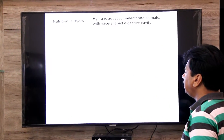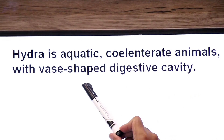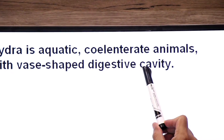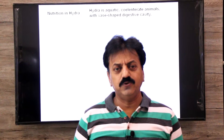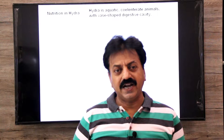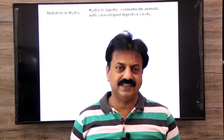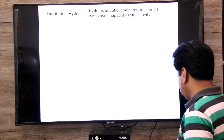Hydra belongs to phylum Cnidaria, which is also called phylum Coelenterata. Hydra is an aquatic coelenterate animal with a vase-shaped digestive cavity. This digestive cavity is called 'phooldan' in Urdu and Hindi, and scientifically it is called the gastrovascular cavity.